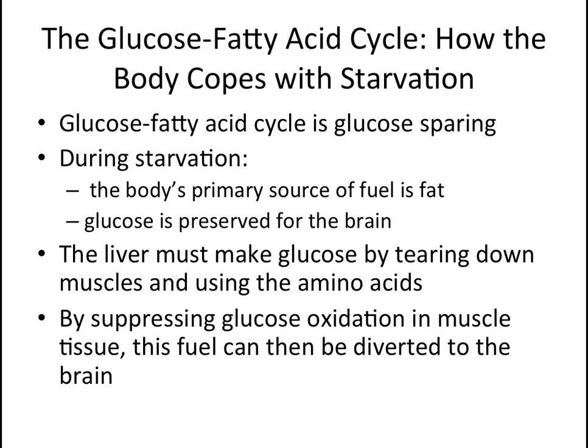As mentioned earlier, the glucose fatty acid cycle is glucose-sparing, which is important during times of fasting or starvation. During such times, the body's primary source of fuel is fat and glucose becomes precious. The liver must make glucose by tearing down muscle tissue and using amino acids as gluconeogenic precursors. By suppressing glucose oxidation in muscle tissue and giving preference to the breakdown of fat, glucose is preserved for use by the brain, since unlike muscle, the brain cannot break down fat for energy.